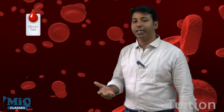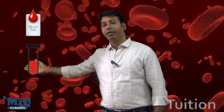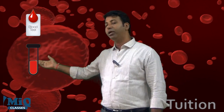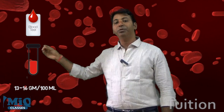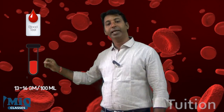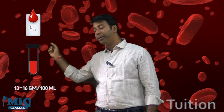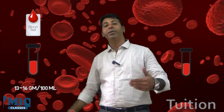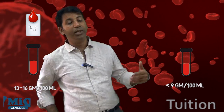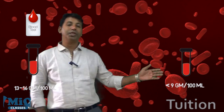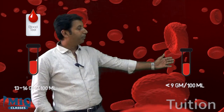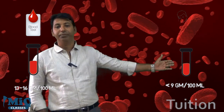In a blood test for a healthy man, the RBC content and hemoglobin content should be around 13 to 16 grams per 100 ml of blood. If a person has less than 13, or if it goes below 9, doctors will consider that person an anemic patient.